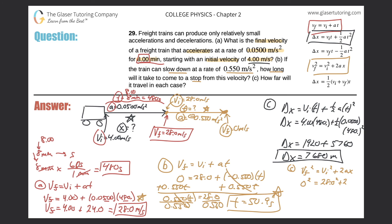Multiplied by two times my acceleration — they told me it's negative — negative 0.550. That's two times 0.550, multiplied by X. The acceleration value is negative.